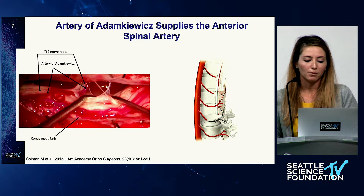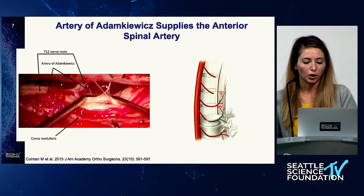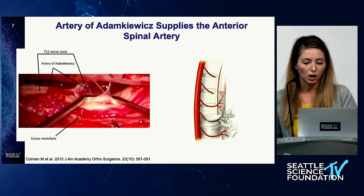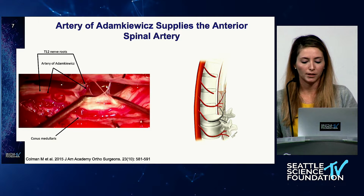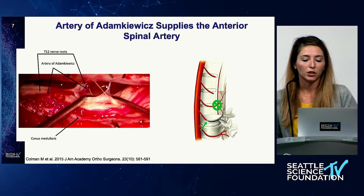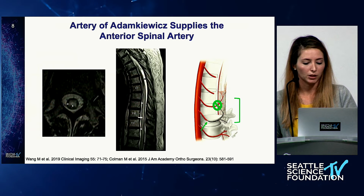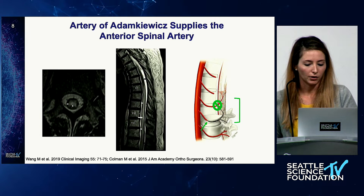The diameter of the anterior spinal artery tapers as it travels down the spine where there are fewer radiculomedullary arteries to supply it. So we've been taught that if you ligate the artery of Adamkiewicz, the real issue is that the anterior spinal artery isn't getting fed, and that can lead to spinal cord infarct and paraplegia. You can see an example of that here on the MRI.